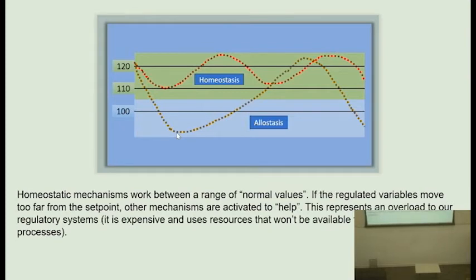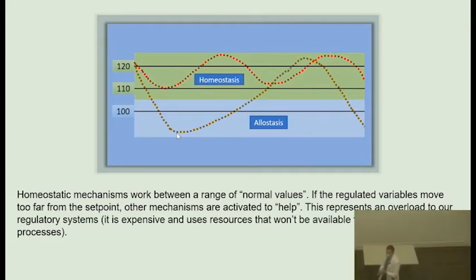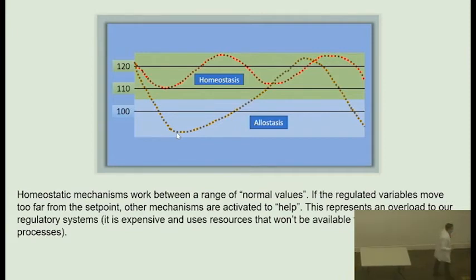We have to use resources that we would normally use for other purposes. For example, when we are under chronic stress, to maintain homeostasis we need to use resources that were destined for reproduction or immunity. The result is a weak immune system and difficulty reproducing properly — difficulties getting pregnant, with lactation, or with other functions.